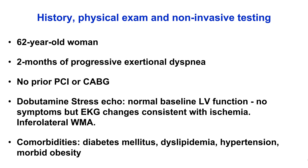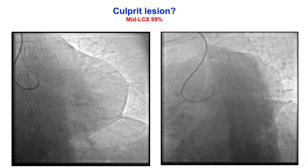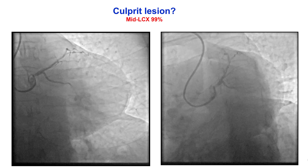The patient was a middle-aged woman with progressive exertional dyspnea and a positive stress test for ischemia in the inferolateral wall. She had normal baseline LV function, but also had diabetes, dyslipidemia, hypertension, and morbid obesity.